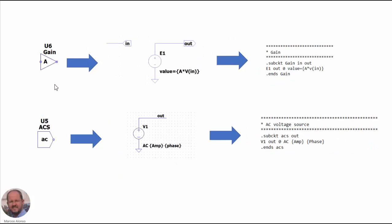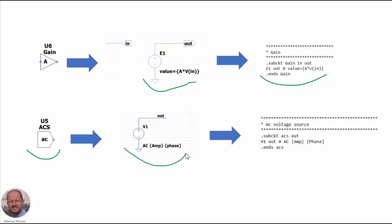This is the implementation of the gain component. It is just a voltage source in which the output is the gain A times the input voltage — A is a parameter passed to the component. And here we have the AC generator for AC analysis, also modeled by a voltage source in which we define AC and two parameters: the amplitude and the phase of the signal to be generated.